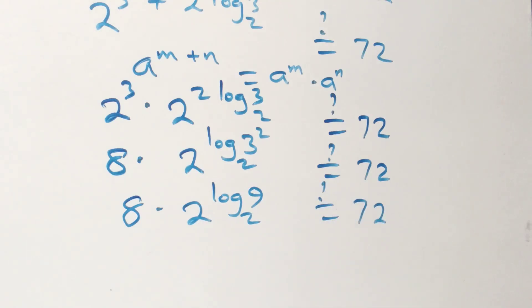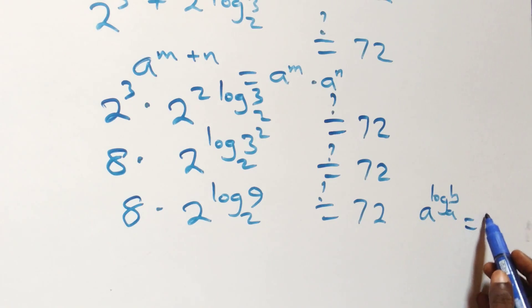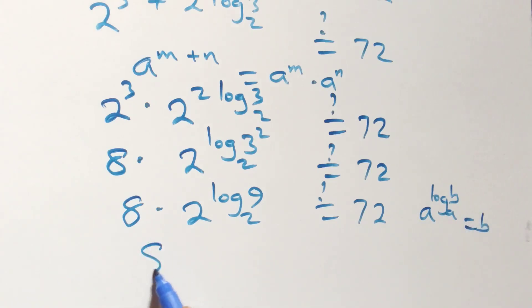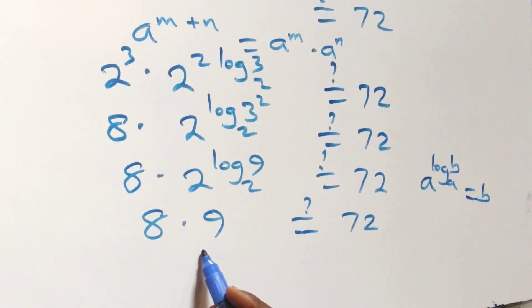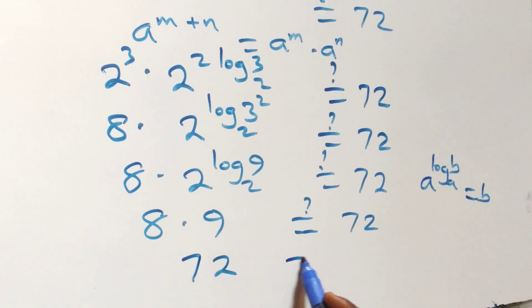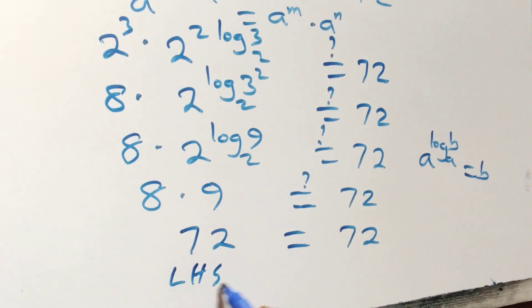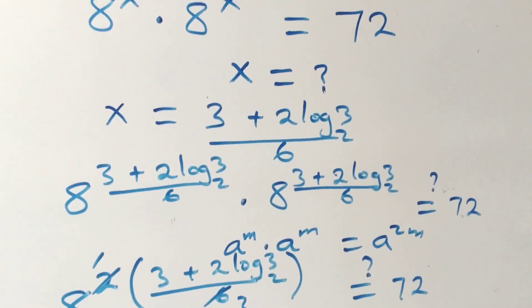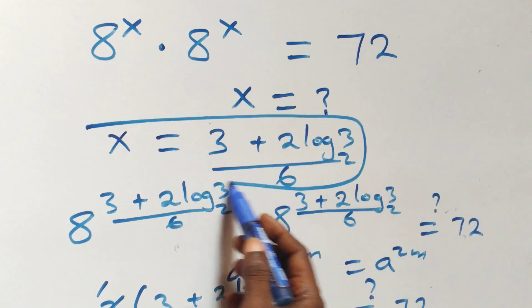This follows from the identity a raised to power log base a of b equals b. So 2 raised to power log base 2 of 9 equals 9. Therefore we have 8 times 9. Is it equals to 72? Of course, 8 times 9 equals 72, which equals 72 on the right-hand side. Therefore, the left-hand side equals the right-hand side, and we conclude that x equals (3 plus 2 log base 2 of 3) over 6 satisfies the given problem.